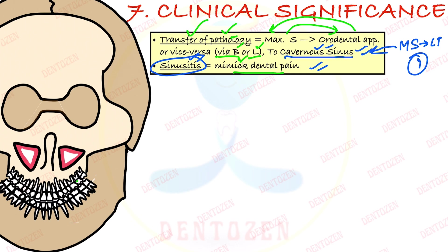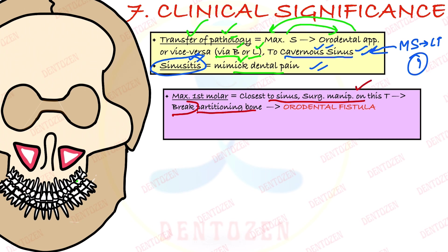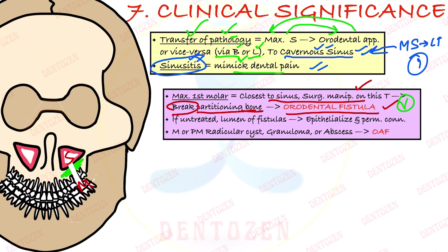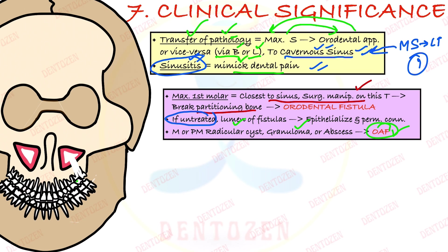Second point: because the maxillary first molars lie very close to the floor of the sinus, any surgical manipulation of these teeth can lead to breakage of the bone between the sinus and the tooth, creating a communication between the sinus and the mouth — known as an oroantral fistula, a very important viva question. This can also arise from pathologies like radicular cysts, granulomas, or abscesses of maxillary posterior teeth. If left untreated, the fistula lumen gets epithelialized and may become a permanent connection between the sinus and the mouth.